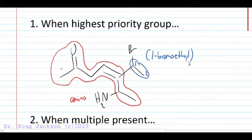Okay, when we number the parent chain we need the lowest number on our highest priority group, so one two three four to the alkene, five six and seven.